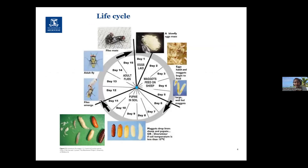Now let's briefly go through the life cycle of Lucilia cuprina. It starts when gravid female flies land on a susceptible sheep. Flies lay about 200 eggs in groups, which helps prevent desiccation of the eggs. Within 8 to 24 hours, first instar larvae emerge from the eggs and then undergo two developmental moults within the sheep to become second instar and third instar larvae.